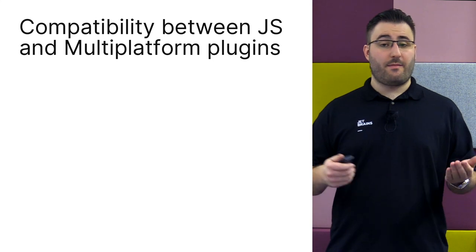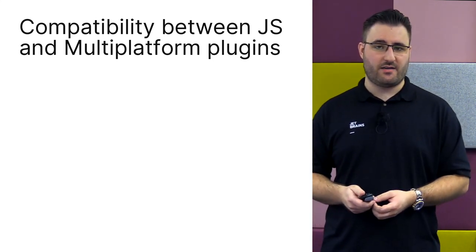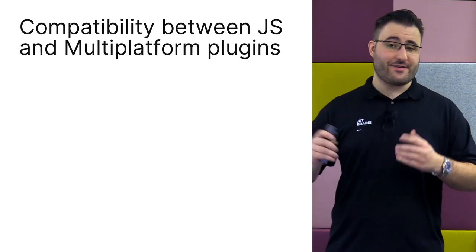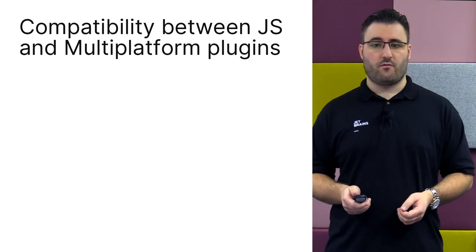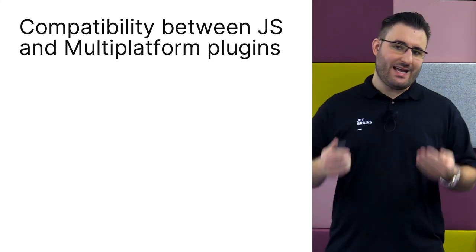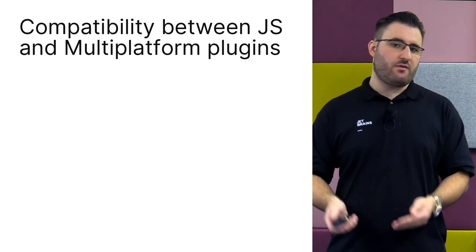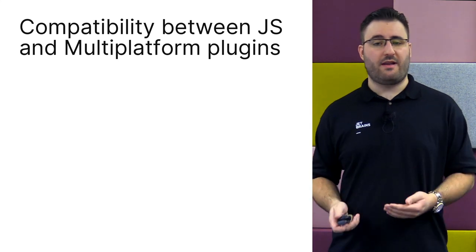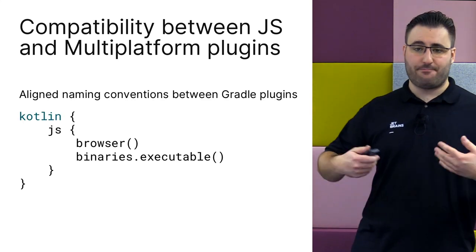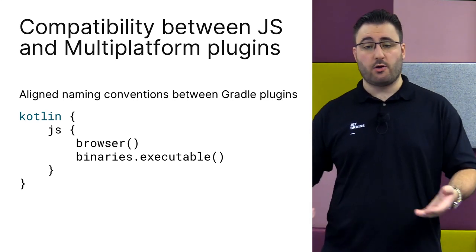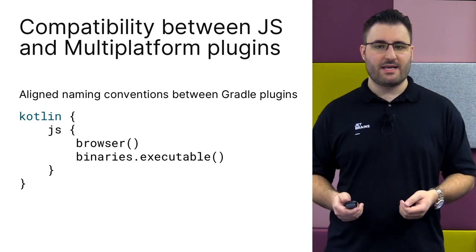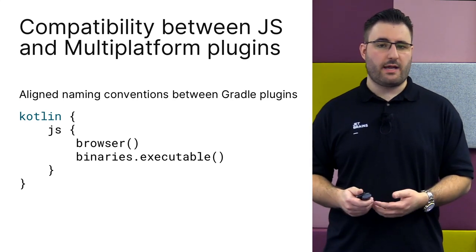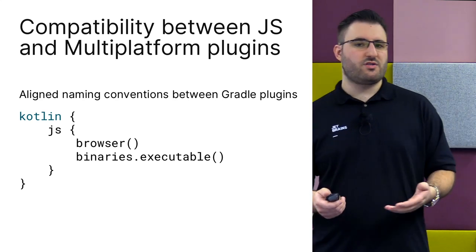Both the Multiplatform and the JS Gradle plugins expose the same underlying functionality. If you're only targeting Node.js or the browser, the JS plugin provides a simple approach to structure and build your project. But we also see a lot of developers using Kotlin.js alongside other platforms — for example, sharing code between JVM server applications and browser front-ends, or sharing business logic between Kotlin Multiplatform mobile targets and web applications. In that case, the Kotlin Multiplatform plugin makes perfect sense. We've also aligned the target naming convention between the two plugins, so a configuration block looks the same regardless of which plugin you use.